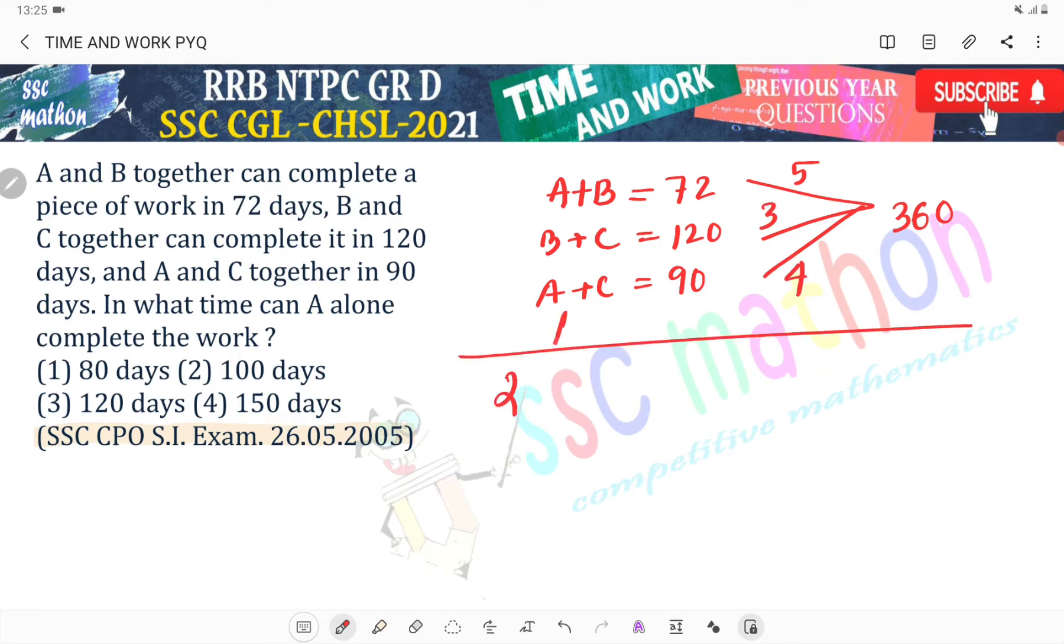A plus B plus C, 2 into. Matlab kya pakad liya humne? Humne pakadha ki 360 unit of work hai total. Yaha A plus B 72 din me karta hai total unit of work. Matlab 360 unit of work.